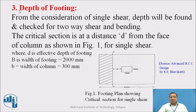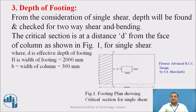Now we should find out the depth of footing. The depth of footing is determined from three considerations: from the consideration of one-way (single) shear, the depth will be found, and this particular depth will be checked for two-way (2A) shear, and also checked for bending. The critical section is at a distance D from the face of the column, as shown in the figure, for single shear.